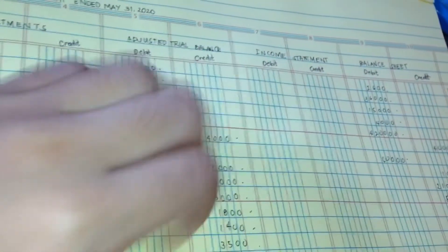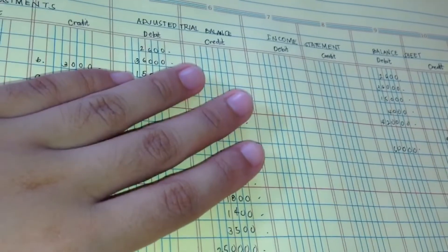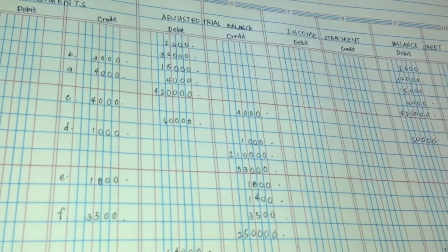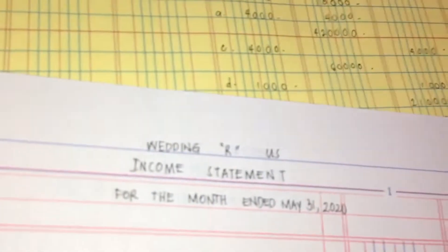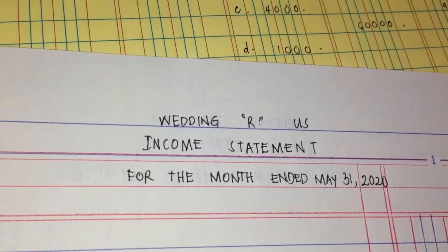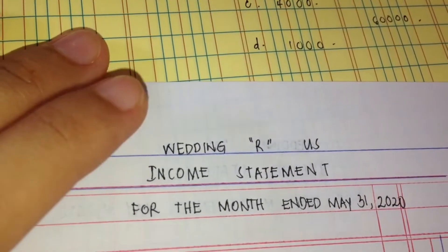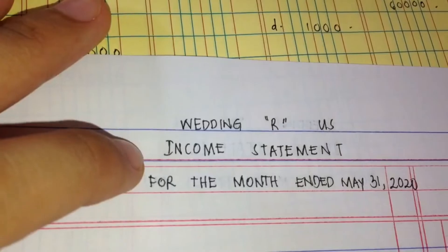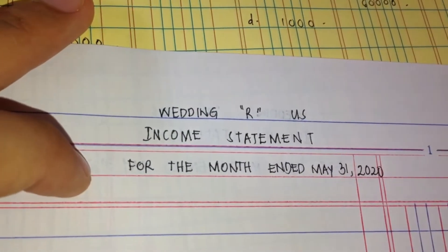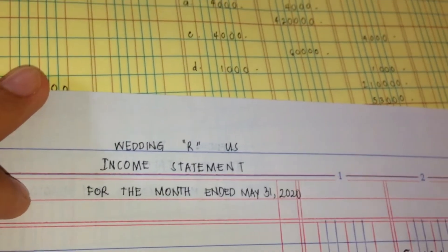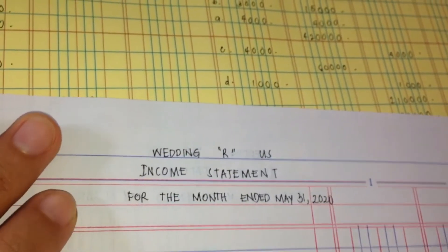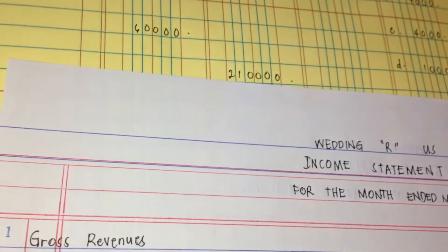In the company's worksheet we prepared last time, we have the column for the income statement. Ang gagawin natin is to get our journal and lalagyan na sya ng heading. Ang heading natin: first, the company name; then 'Income Statement'; and for the month ended, May 31, 2020. What we'll do next is to write first the gross revenues.